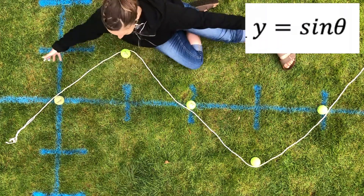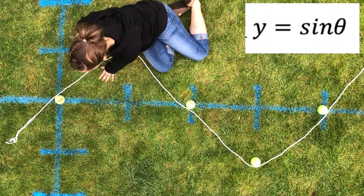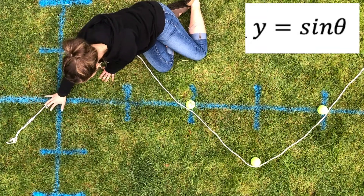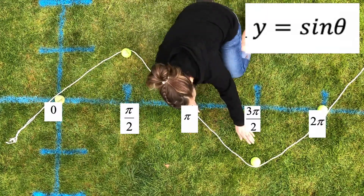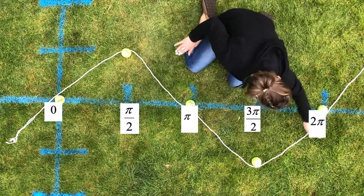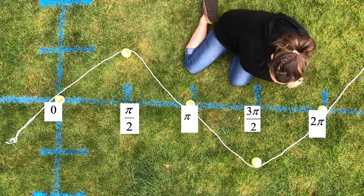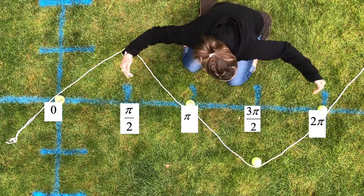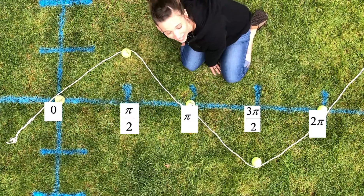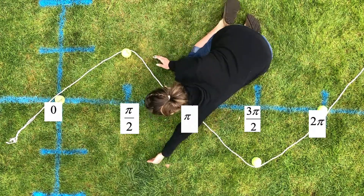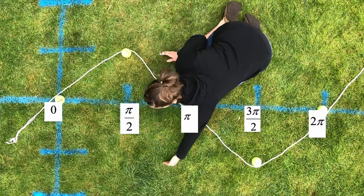So last time we learned how to graph sine and we learned the five pattern points. We have y equals sine theta. Sine of zero equals zero. Then we go high, zero, low, zero. And that is one cycle of sine that has a period of 2 pi and an amplitude of 1, because that's half the height.